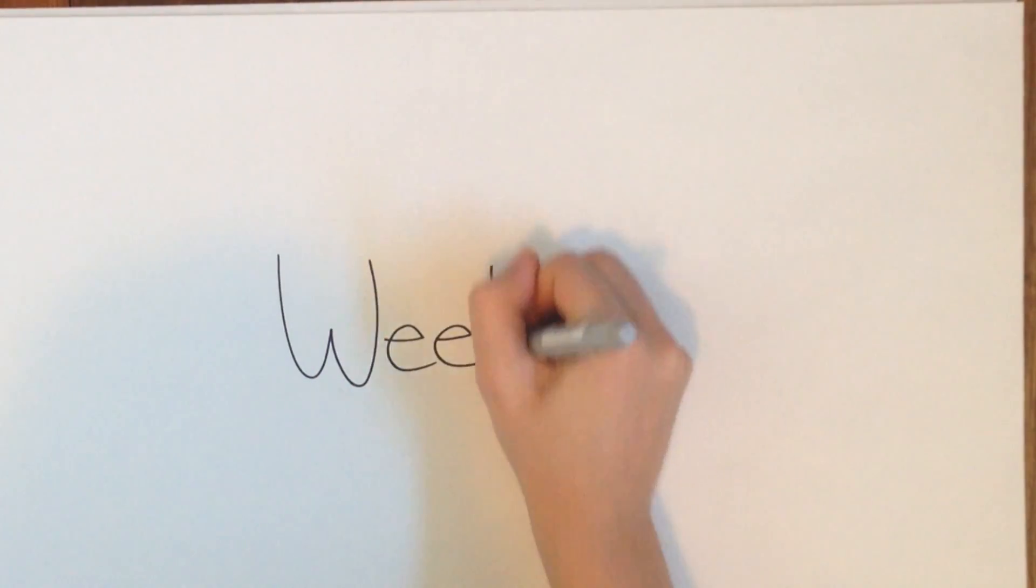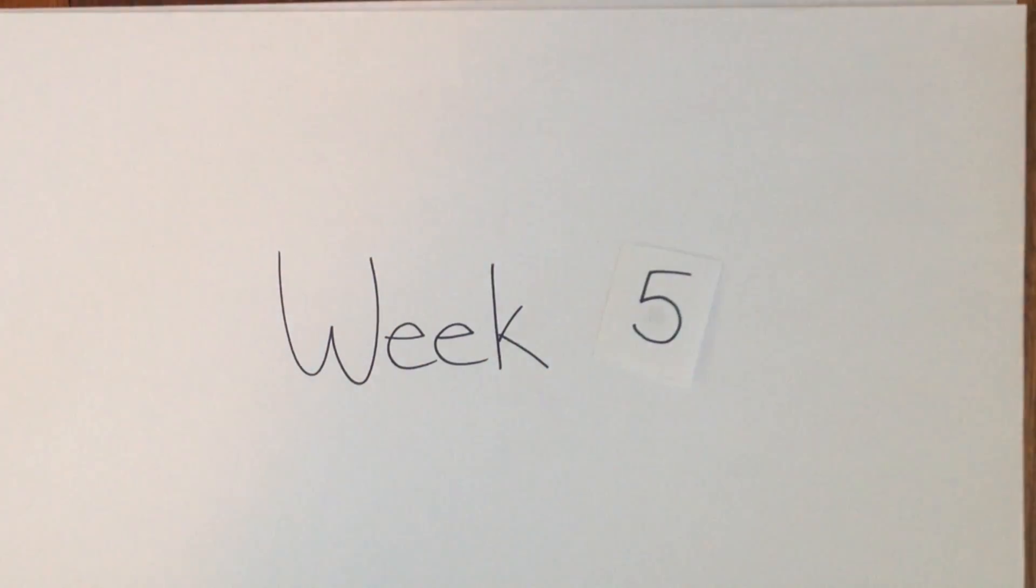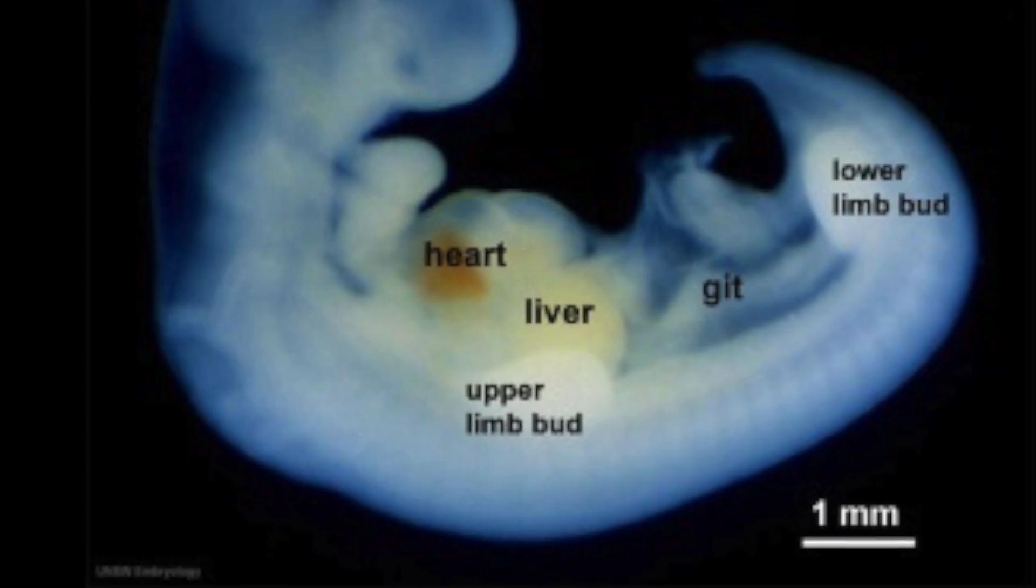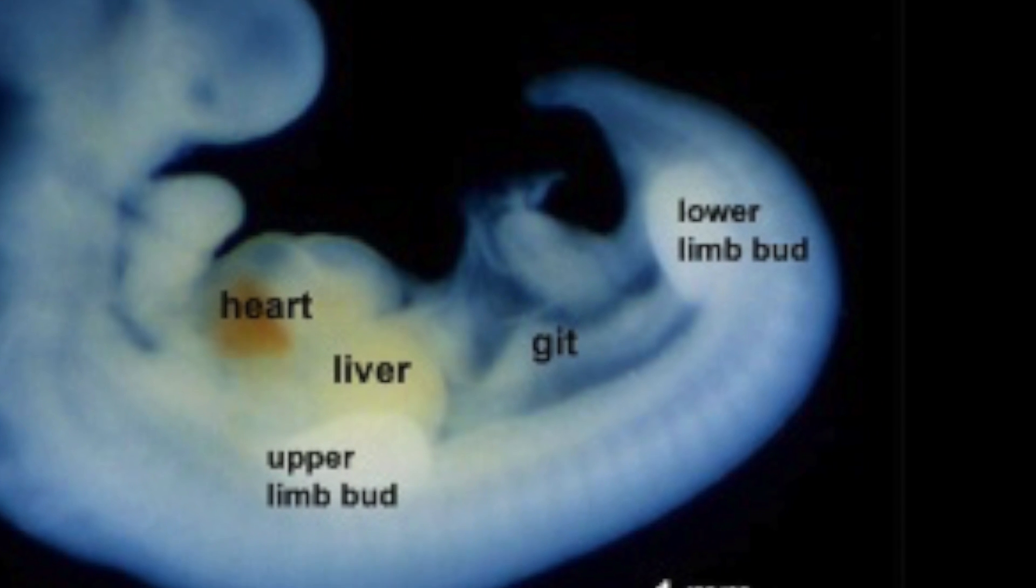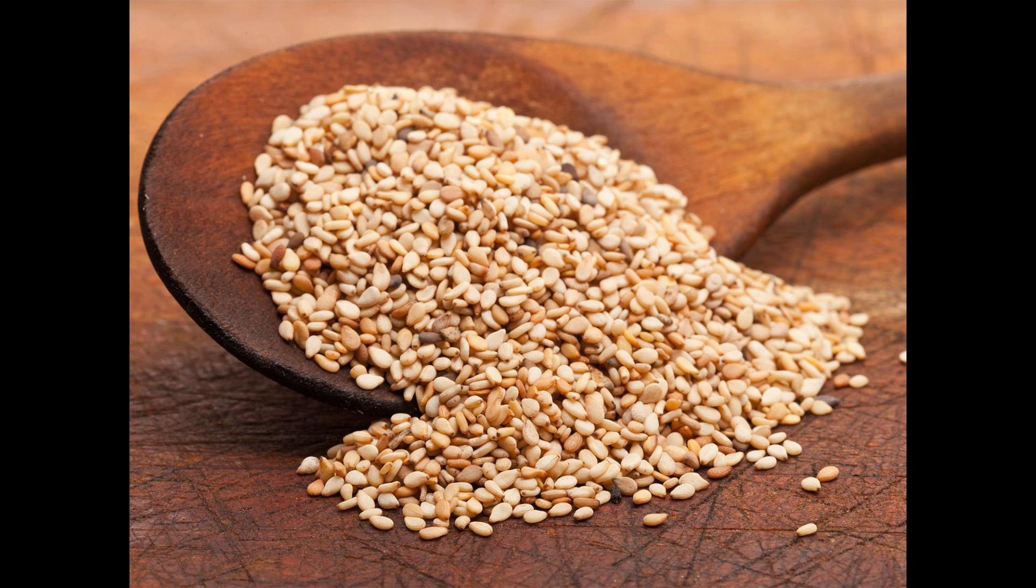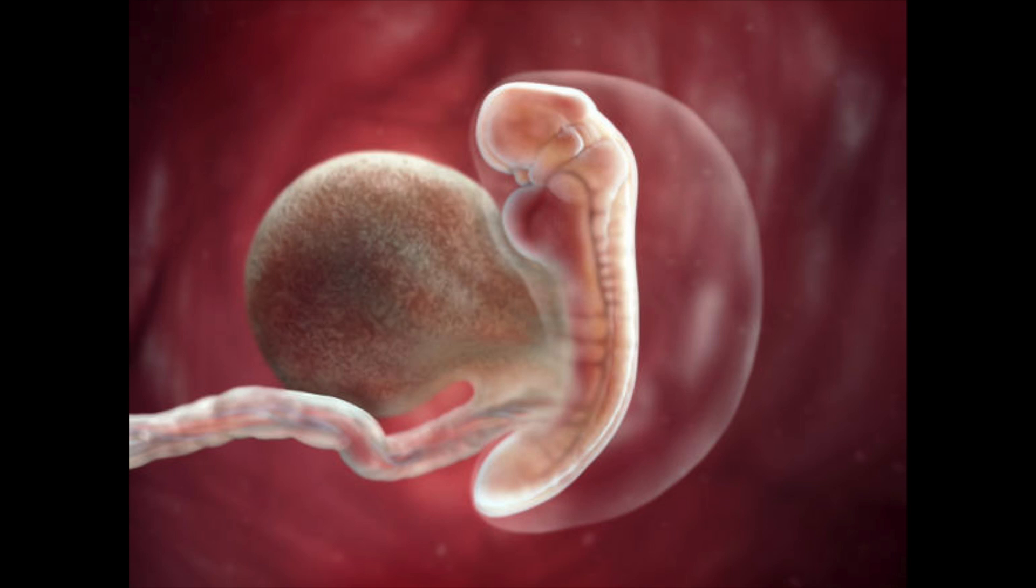During the fifth week, growth of the head is considerable due to the rapid development of the brain. Emerging arms and legs can be seen as protruding limb buds. The heart and circulatory system also begin to form in the mesoderm and are visible externally as a bulge, along with the liver and umbilical cord. At this point, the embryo is about the size of a sesame seed and looks like a tiny tadpole rather than a human.